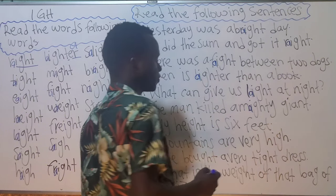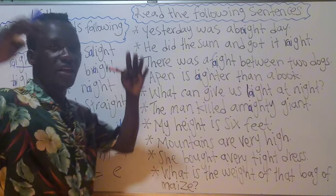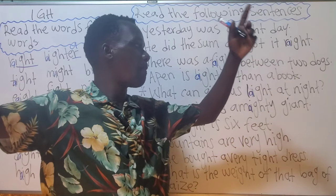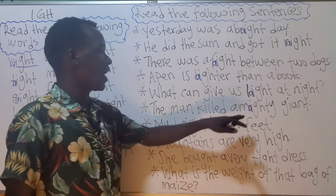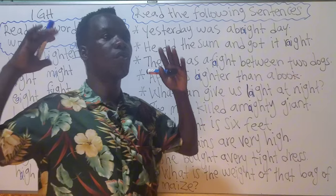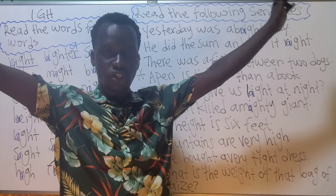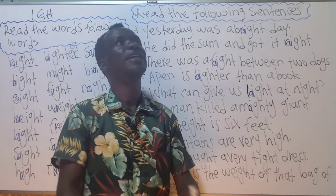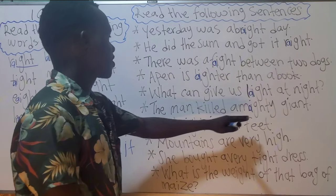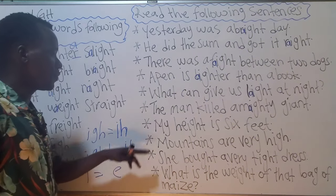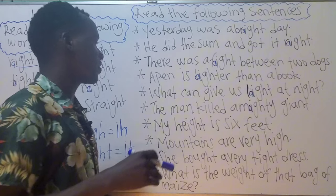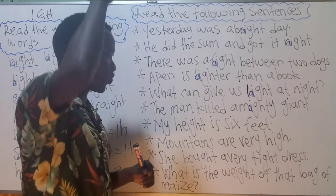'Mighty' means strong and powerful — strong, big, and powerful. A giant is a person who is really bigger and taller than the rest of the people in the world. So the man killed this mighty giant.